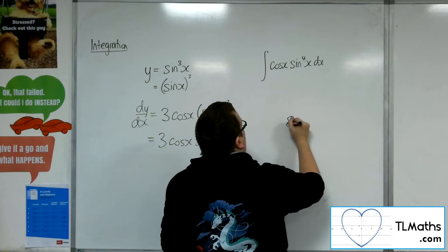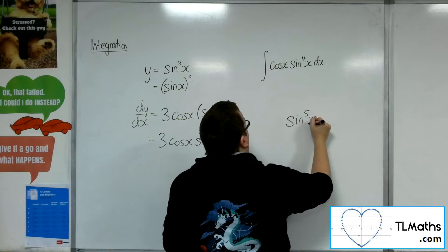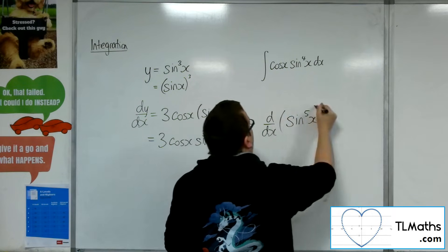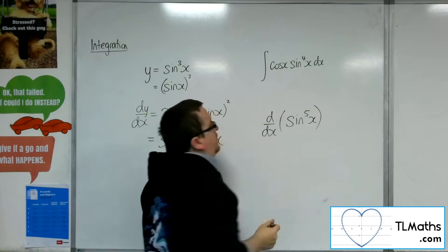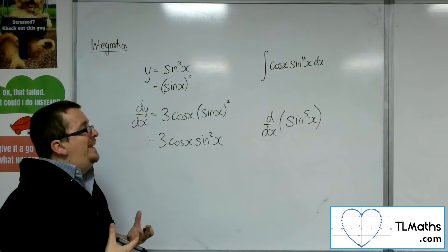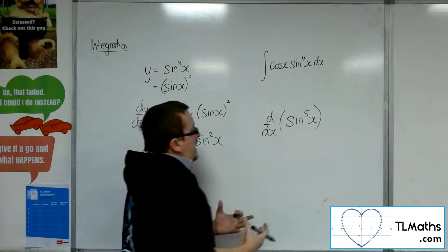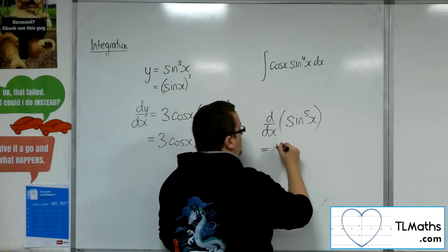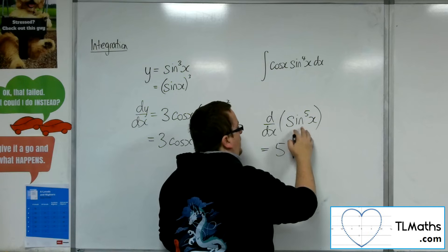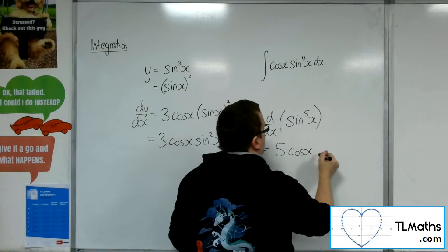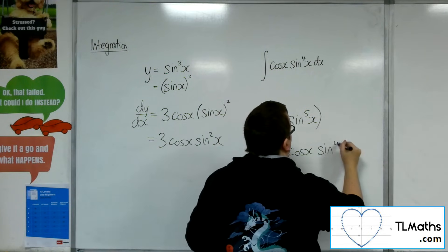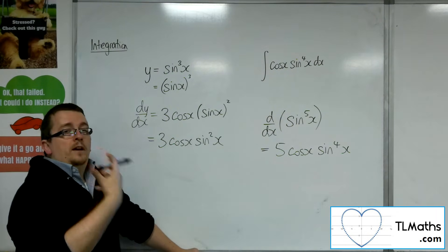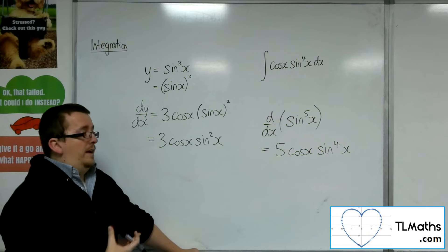So if I looked at sine of the 5x and differentiated that, because I'd be expecting to get from sine of the 4x up to a sine of the 5x in integrating, if I differentiate that, I've got the 5 coming down to the front, the derivative of what's inside is cosine x, so that comes outside, and I drop 1 from the power of the sine to the 5x. So I get 5 cosine of x times sine to the 4x.